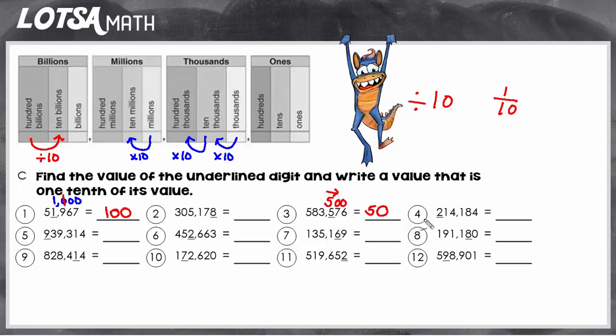Let's look at number twelve. Right now the value of the nine is ninety thousand. To make it ten times smaller, or one-tenth of its original value, we can just move the nine over one place. So instead of the ten-thousands place, we want to put the nine now in the one-thousands place. So nine thousand is one-tenth of ninety thousand.